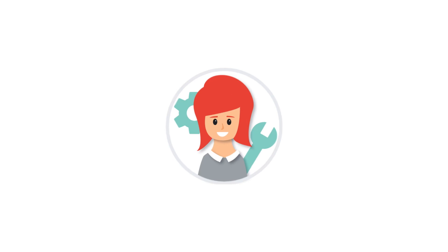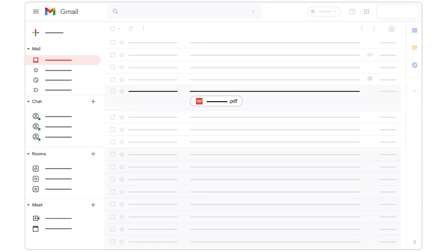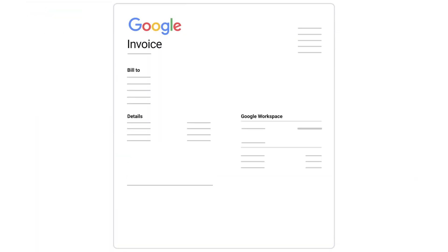We'll send a PDF of the invoice to your email every month. Your invoice contains the invoice number, the date the bill was generated, the billing ID, the domain, and the amount that's due, including any associated taxes.